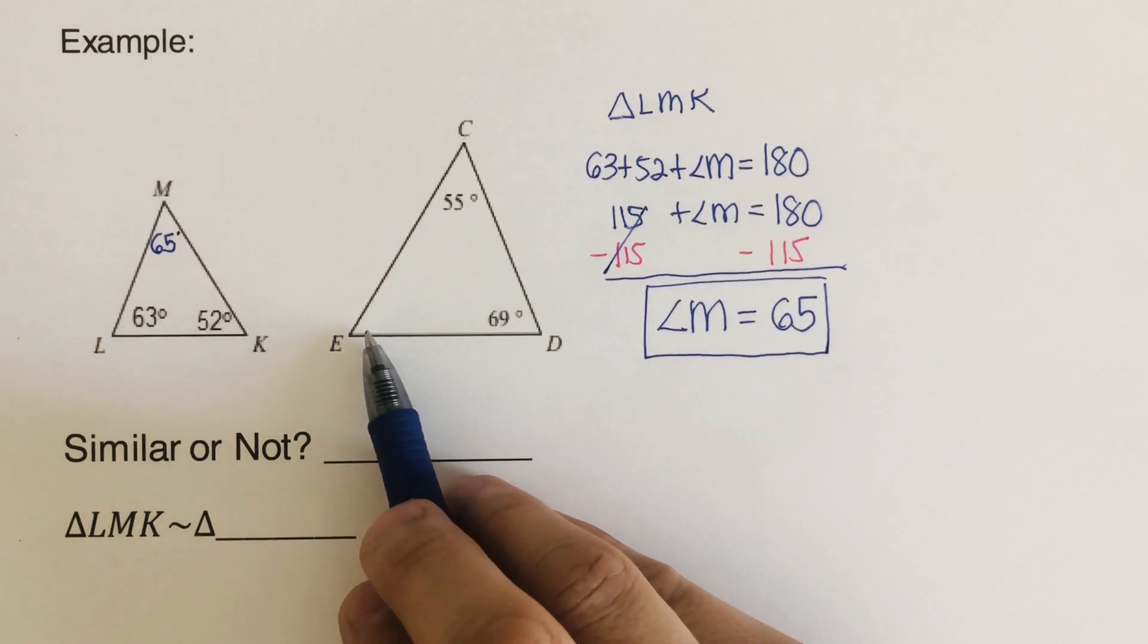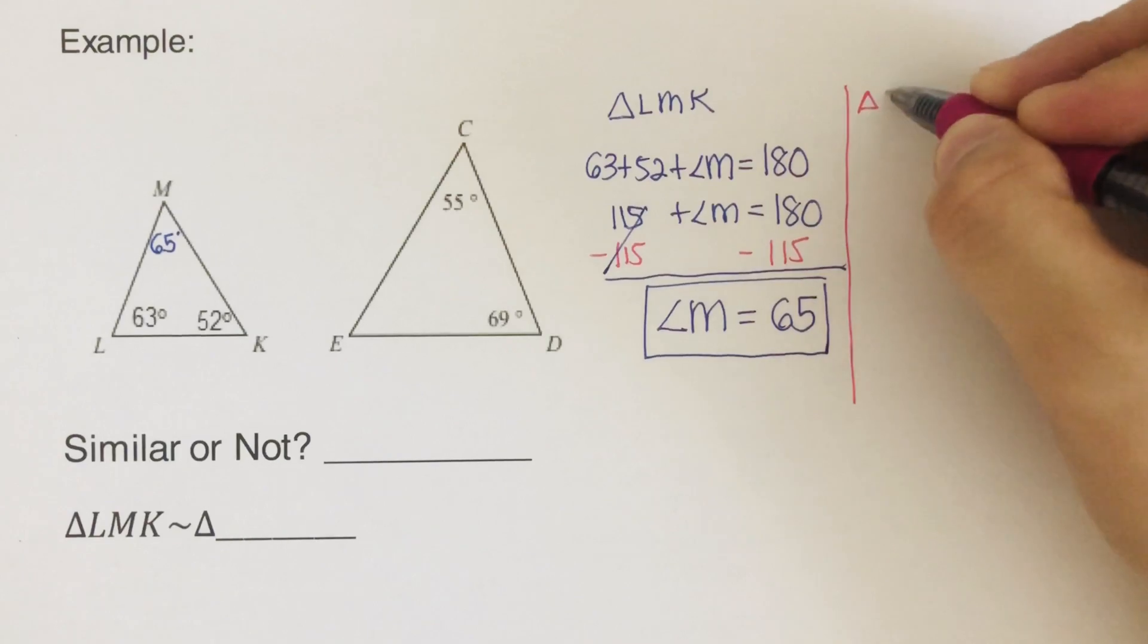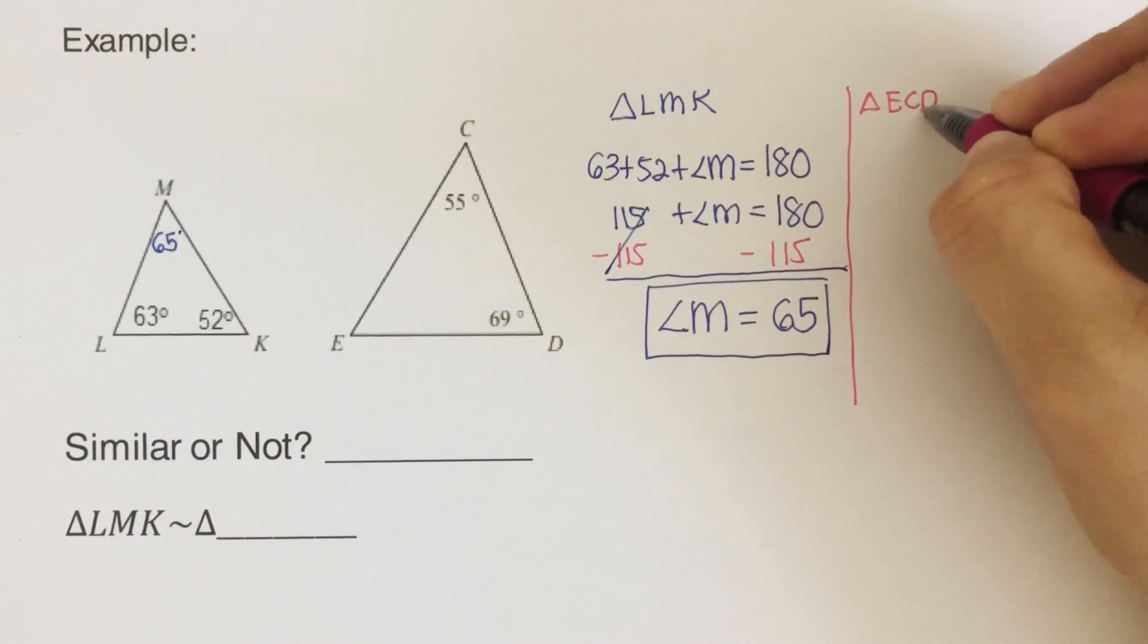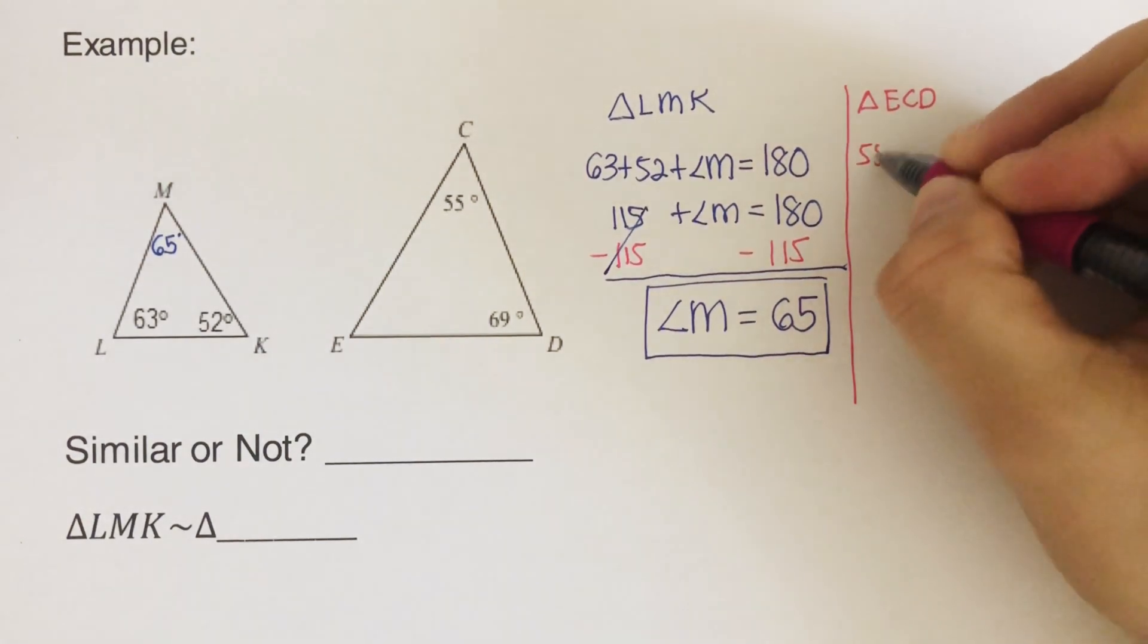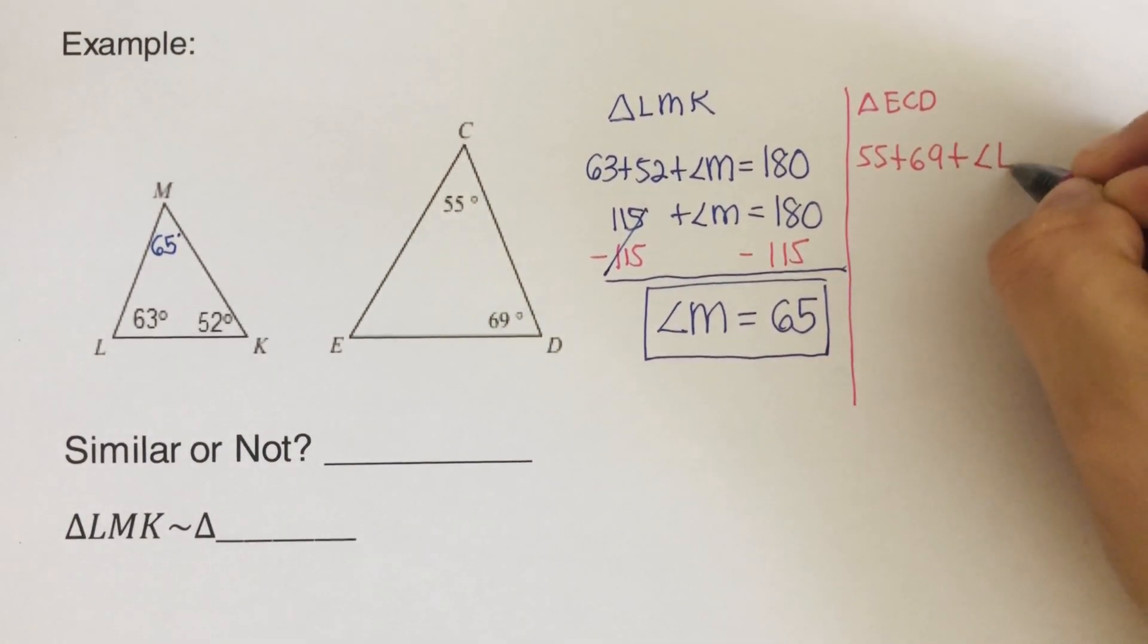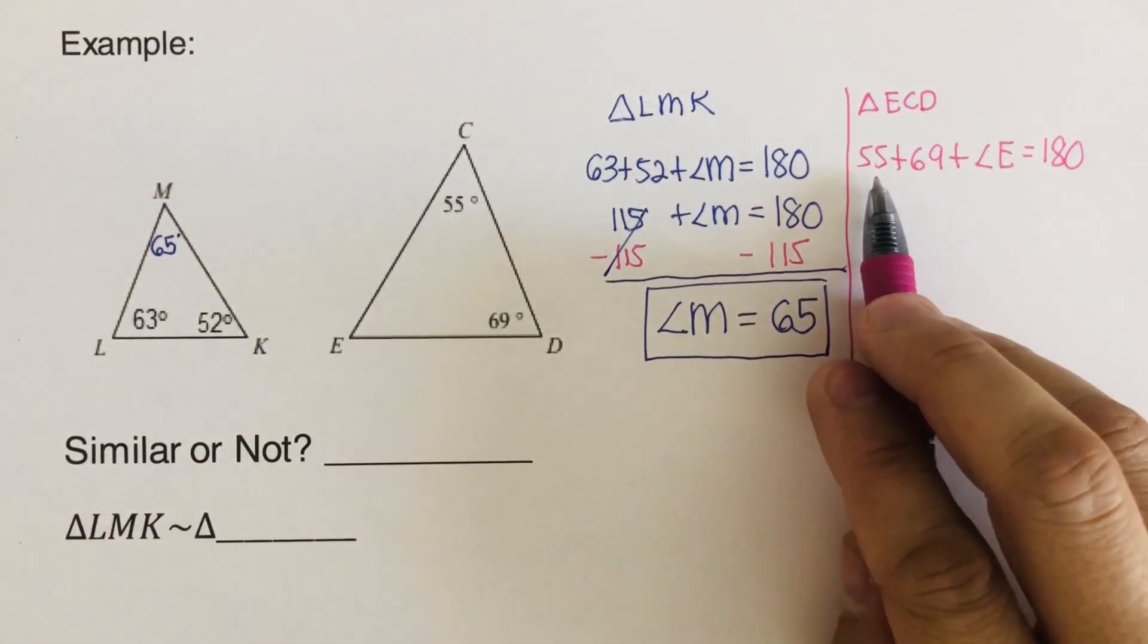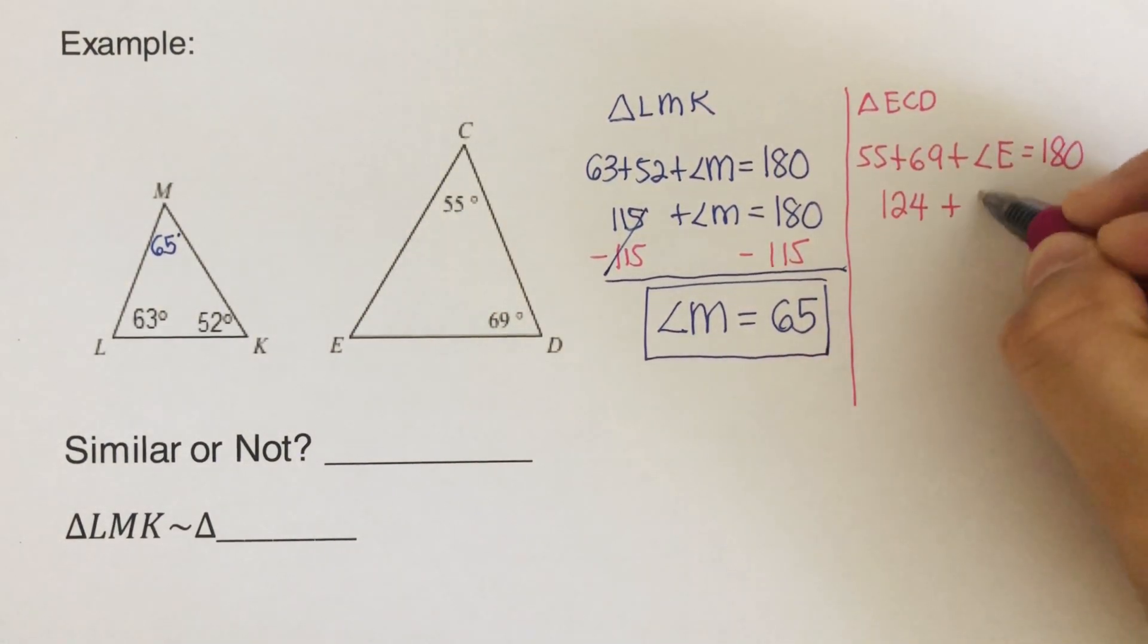But let's try to see what angle E is. So this is the work for triangle ECD. So then we go ahead and add 55 plus 69 plus angle E is equal to 180. Okay, and then we add these two together. 55 plus 69 is 124 plus angle E equals 180.